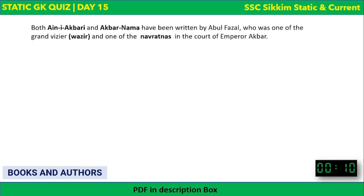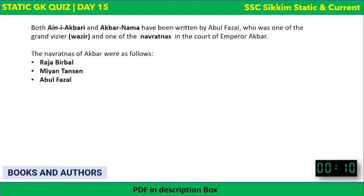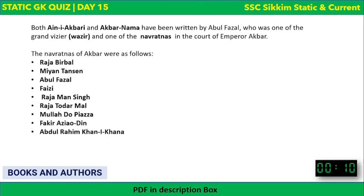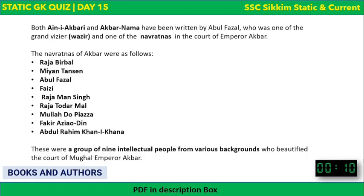The Navratnas — meaning nine ratnas or nine influential people in Akbar's court — were: Raja Birbal, Mian Tansen, Abul Fazl (who wrote the two books), Faizi, Raja Man Singh, Raja Todar Mal, Mullah Do Piaza, Fakir Aziao-Din, and Abdul Rahim Khan-i-Khana. These were the nine intellectual people from various backgrounds who adorned the court of Mughal Emperor Akbar.